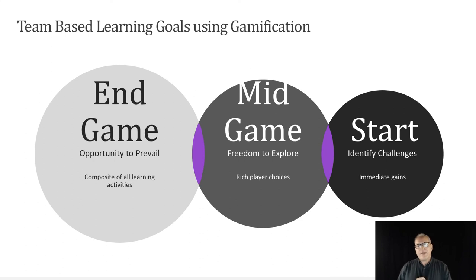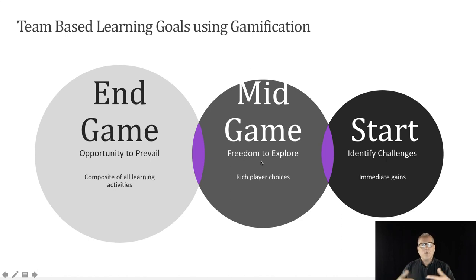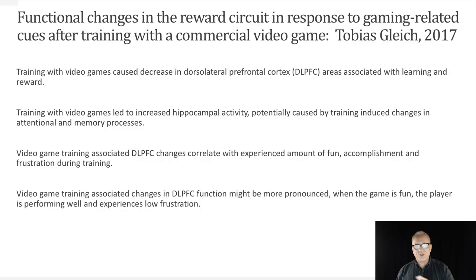Any good game we build for learning should have a start, a mid-game, and an endgame. We're moving toward the endgame, which is an opportunity to prevail — a composite of everything you've learned. The mid-game is freedom to explore with rich player choices and ways of deciding how to approach the endgame. The start is simply identifying challenges and immediate gains. Think about learning games using deep gamification as a process of a journey with different stages to learning.